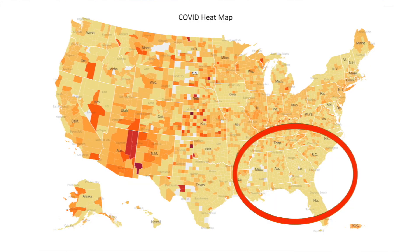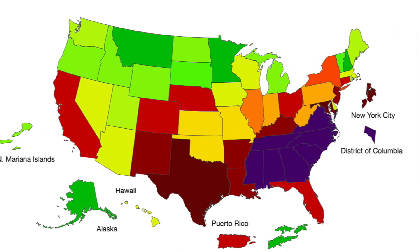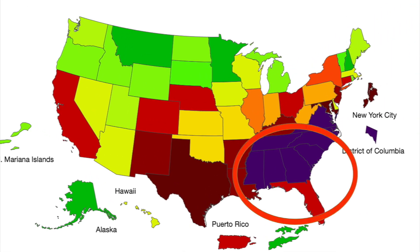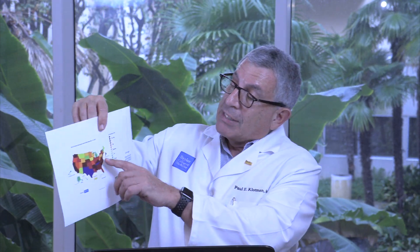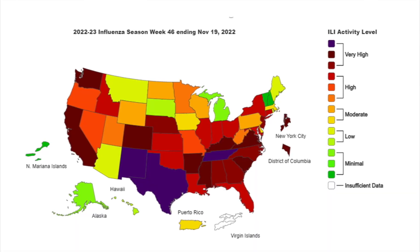Looking at a COVID map, there is very little COVID in the Southeast United States right now. Comparing that to flu, which is really hot in the Southeast — the opposite of what's going on with COVID — it's beginning to spread from the Southeast to the rest of the country.